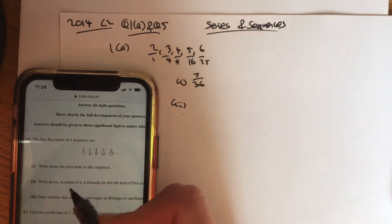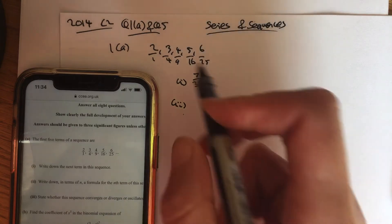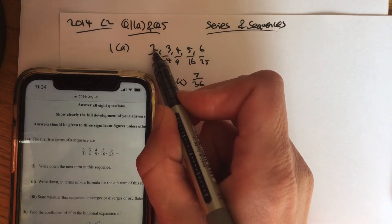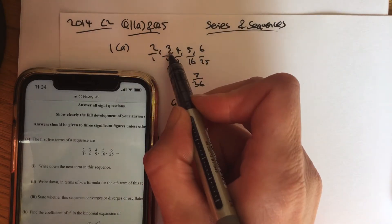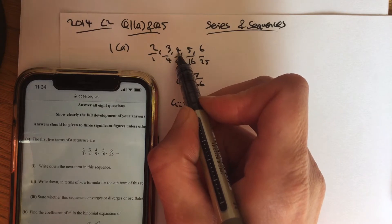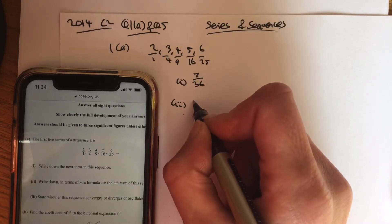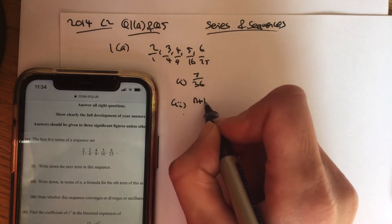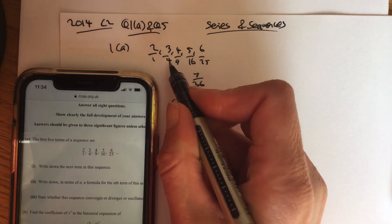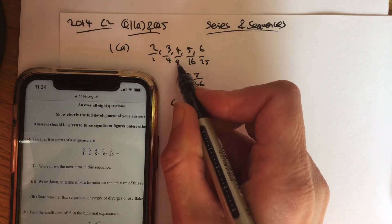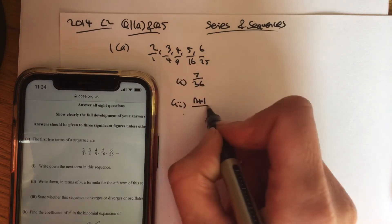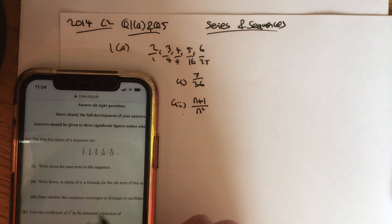Part 2 is finding nth term for this sequence. Now, the first term goes to 2, the second term goes to 3, the third term goes to 4. So the nth term is going to go to n plus 1. The first term is 1 squared, the second term is 2 squared, the third term is 3 squared. So the nth term is going to be n squared.